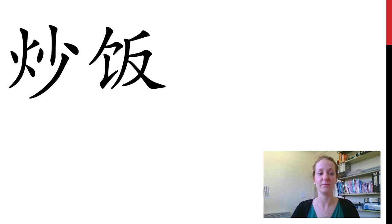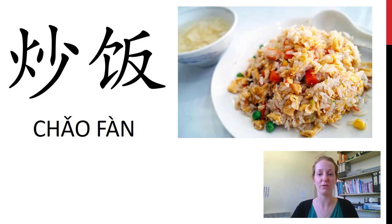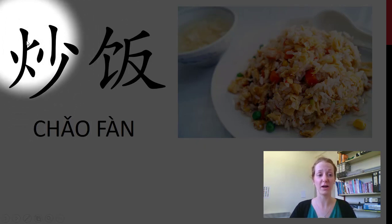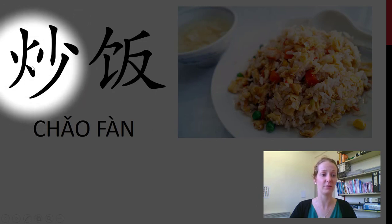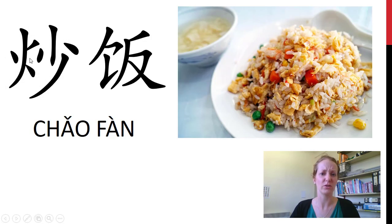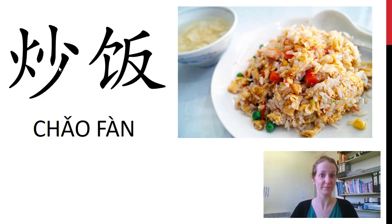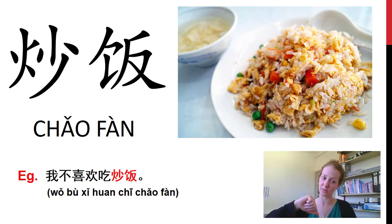This is another type of 饭 — we have 炒饭, fried rice. On the left-hand side of 炒, this is 火 which is fire. We use fire to fry things. So 炒 means to fry, and 饭 is part of 米饭, the rice — combine them together: 炒饭, fried rice. For example, 我不喜欢吃炒饭. 你呢?